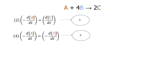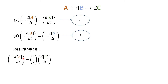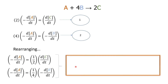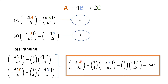We can rearrange these two equations with the rate of consumption of A as the subject, and this will give us the following: rate of consumption of A equals half the rate of formation of C, and rate of consumption of A equals a quarter of the rate of consumption of B. These terms are equal to the rate of consumption of B equals half the rate of formation of C, and all these terms equal the rate of reaction.